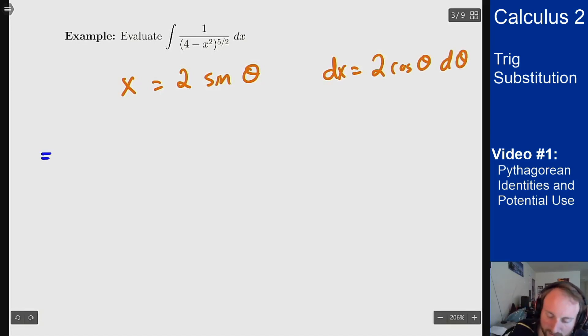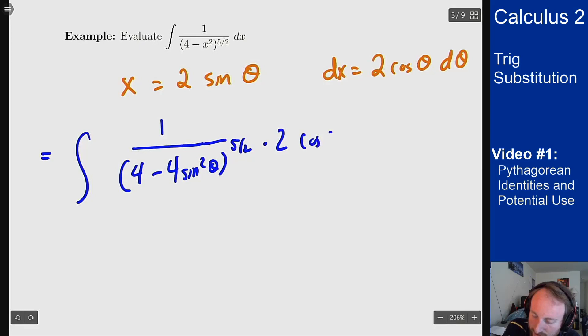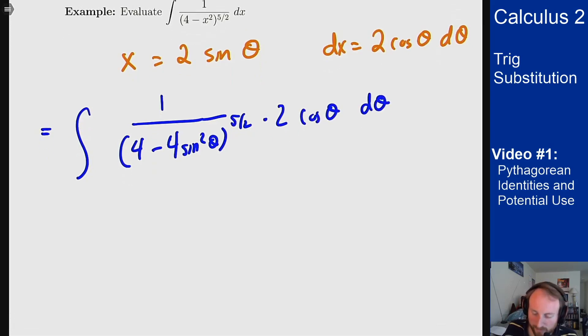If I do that, I get the following: 1 over (4 minus x squared), 4 sine squared theta, to the 5 halves, times a 2 cosine theta d theta. And now I can simplify this out. In the denominator there, I have a 4 minus 4 sine squared. That's the same as a 4 cosine squared theta.